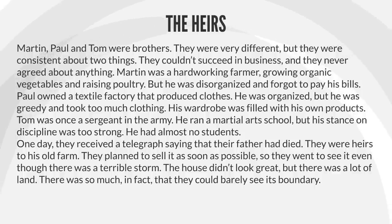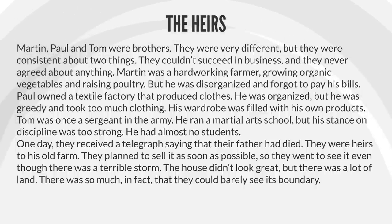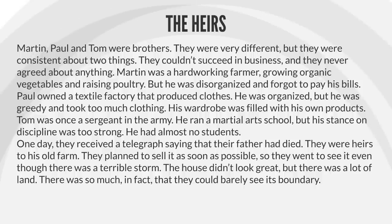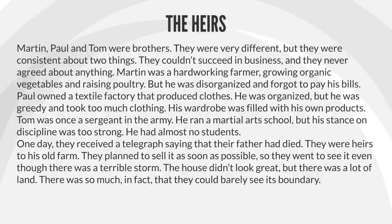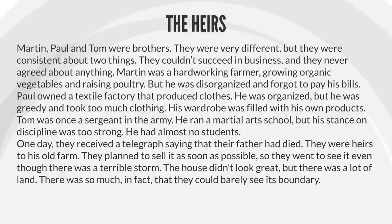The Heirs. Martin, Paul, and Tom were brothers. They were very different, but they were consistent about two things: they couldn't succeed in business, and they never agreed about anything. Martin was a hard-working farmer, growing organic vegetables and raising poultry, but he was disorganized and forgot to pay his bills. Paul owned a textile factory that produced clothes. He was organized, but he was greedy and took too much clothing. His wardrobe was filled with his own products.